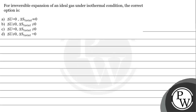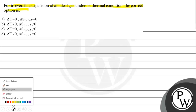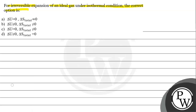That's your question. The question says: for irreversible expansion of an ideal gas under isothermal condition, the correct option is option A — change in internal energy is equal to 0 and total entropy is equal to 0.